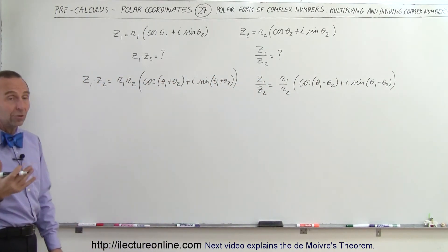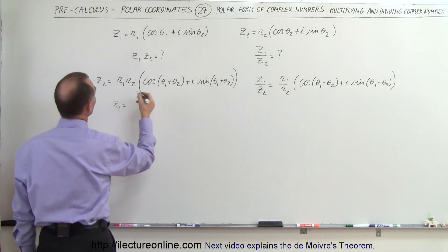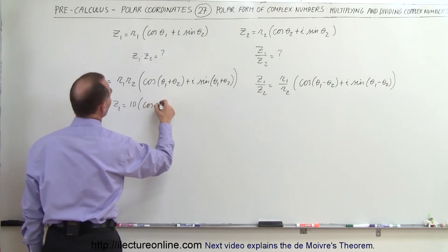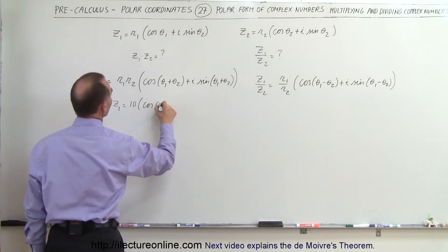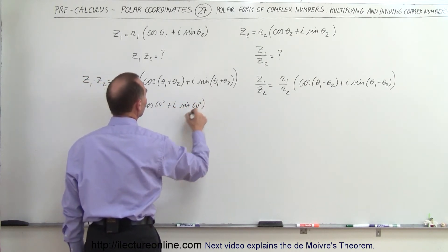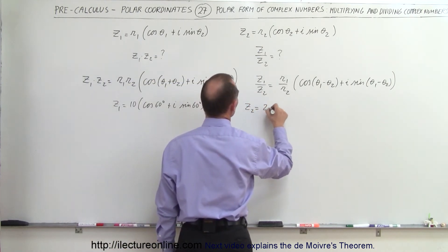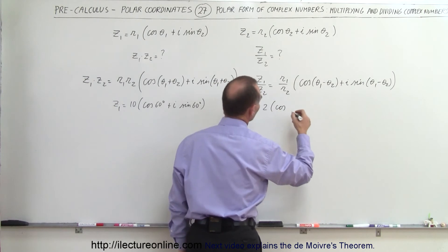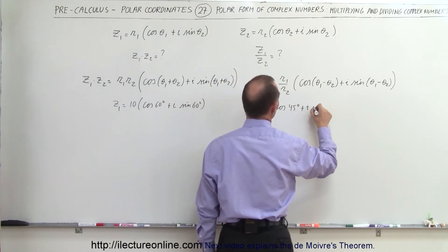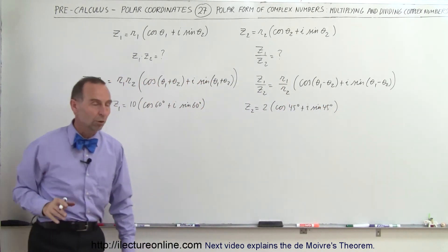To illustrate that, let's go ahead and do an example. Let's say that Z1 is equal to 10 times the cosine of 60 degrees plus i times the sine of 60 degrees. And let's say that Z2 is equal to 2 times the cosine of 45 degrees plus i times the sine of 45 degrees. So again, these are two complex numbers in polar form.